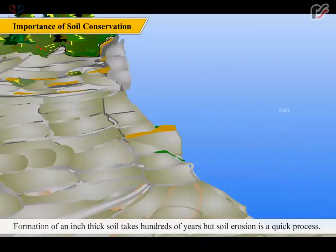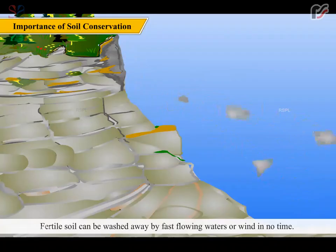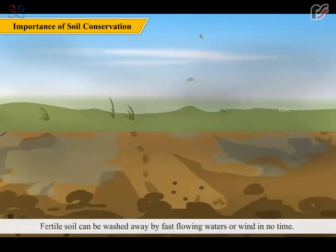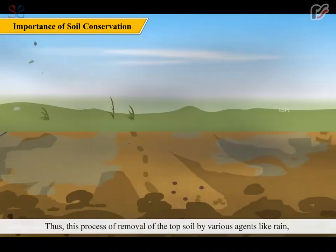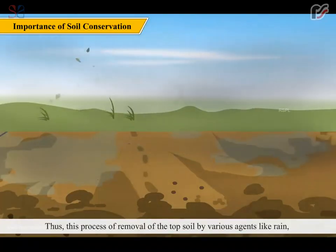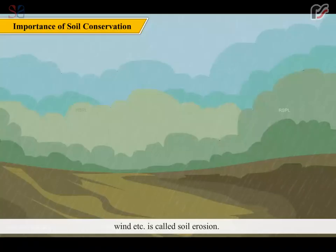Formation of an inch thick soil takes hundreds of years, but soil erosion is a quick process. Fertile soil can be washed away by fast flowing water or wind in no time. Thus, this process of removal of the top soil by various agents like rain, wind, etc. is called soil erosion.